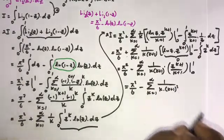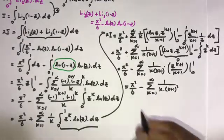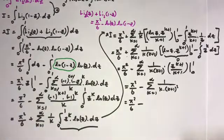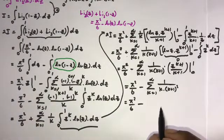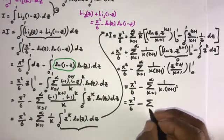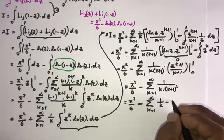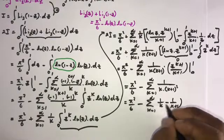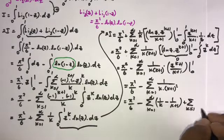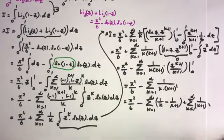So we have the infinite sum from k equals 1 to infinity of 1 over [k(k+1)²]. To evaluate this, we use partial fractions: 1/[k(k+1)²] equals 1/k minus 1/(k+1), plus 1/(k+1)². So we split into the infinite sum of [1/k minus 1/(k+1)] plus the infinite sum of 1/(k+1)².